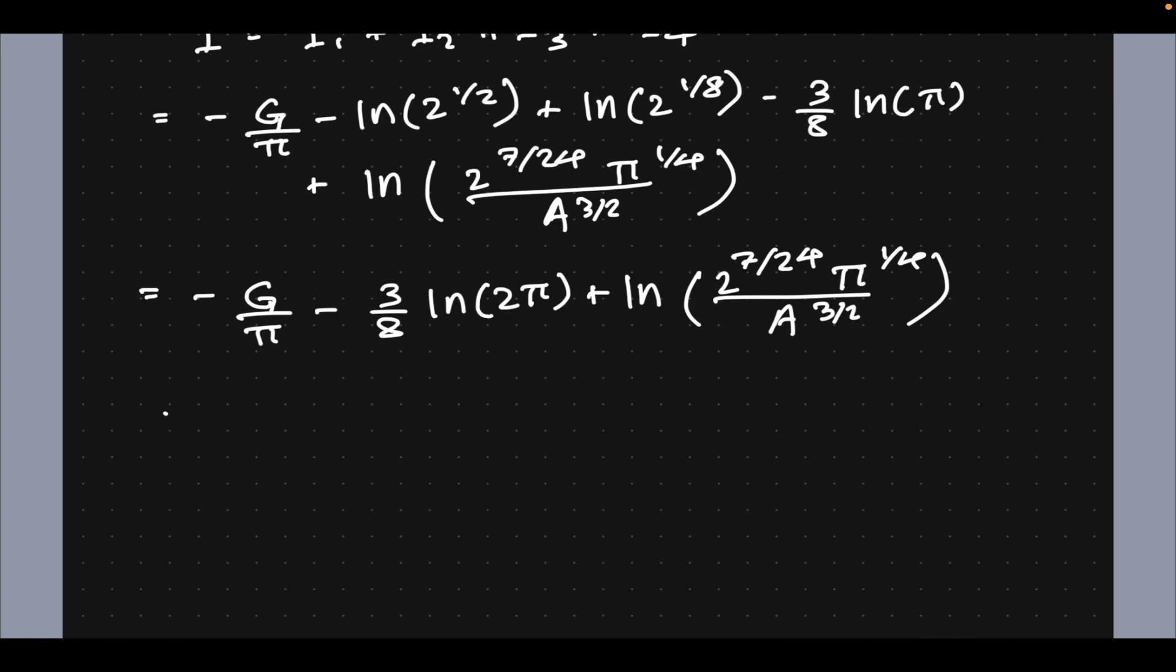And the ugly is the Glaisher-Kinkelin constant that I'm currently writing in the denominator of the argument of the natural log. And now nothing else can be said, nothing else can be done but mind-numbing algebra: natural log of 2^(1/12) times π^(1/8), it's just law of indices.